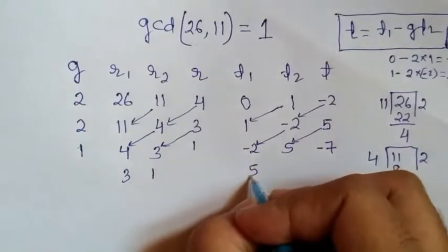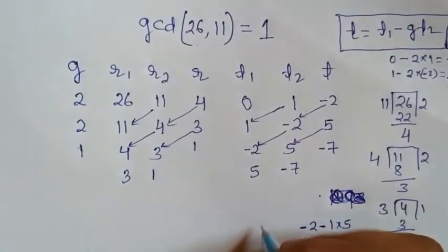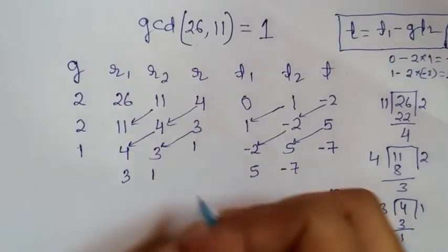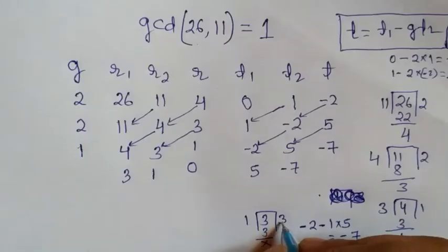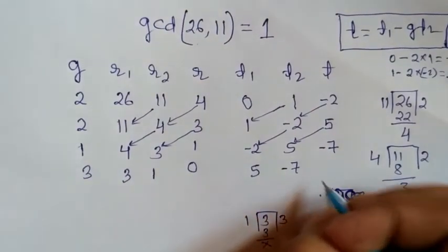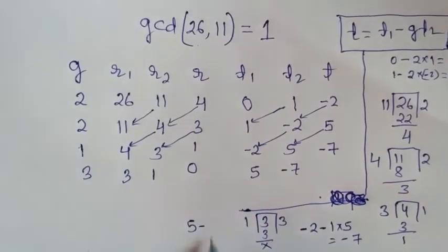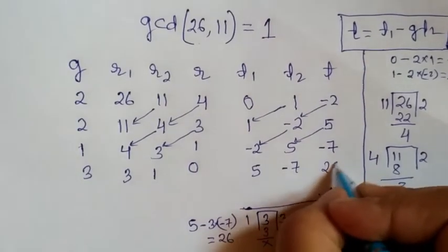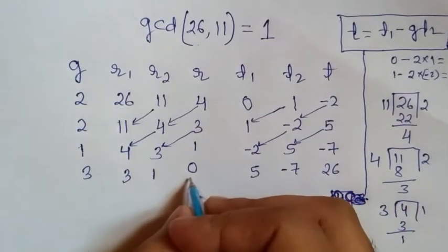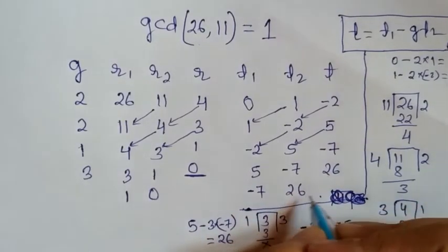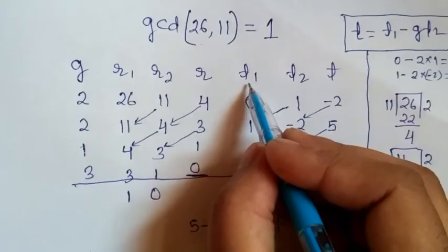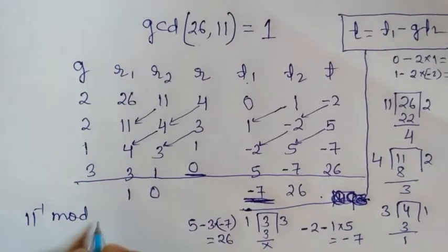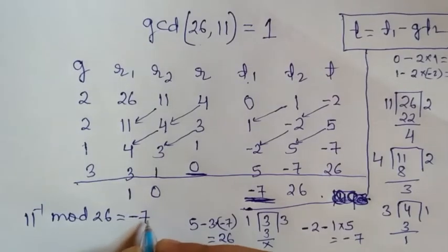Again R2 value comes to R1 giving 3, remainder 1 comes to R2. Now dividing 3 by 1 gives quotient 3 with remainder 0. This will be the last step because the remainder is 0. Our answer is read from T1, which is minus 7. So 11 inverse mod 26 is minus 7.